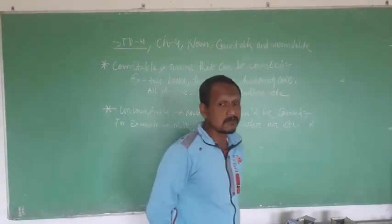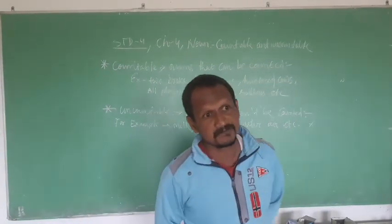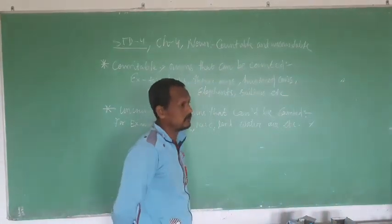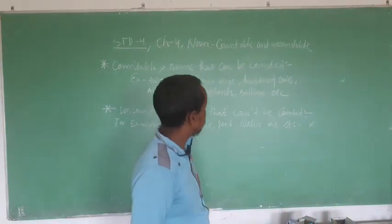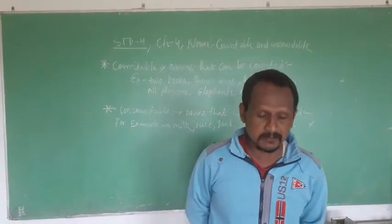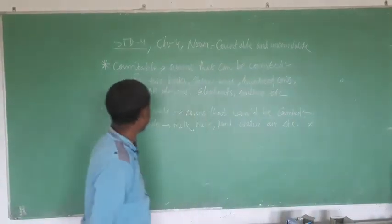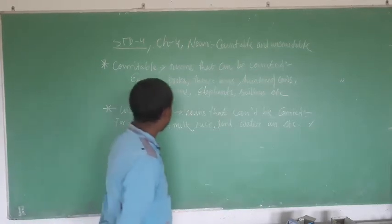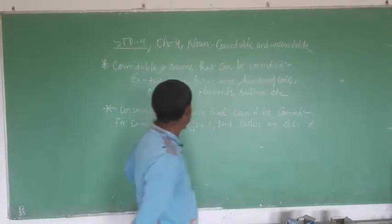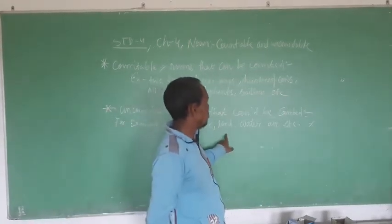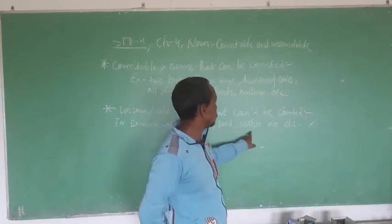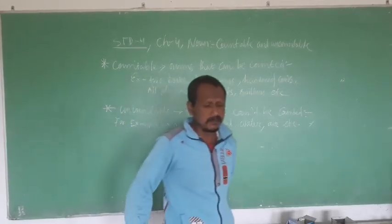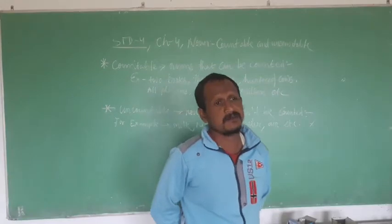And what is Uncountable Noun? The noun which cannot be counted is called Uncountable Noun. For example, Uncountable Nouns are milk, rice, land, water, air, etc. There are so many things around you.